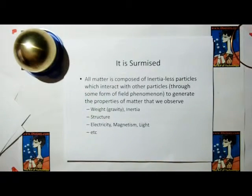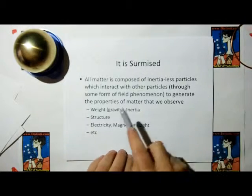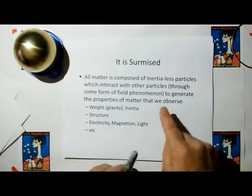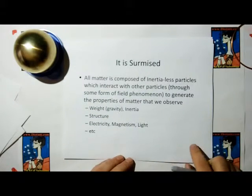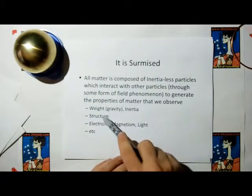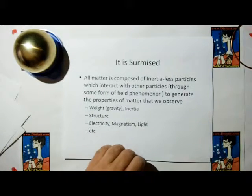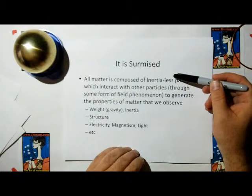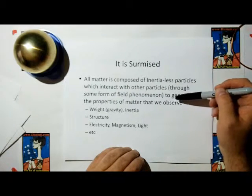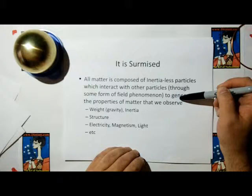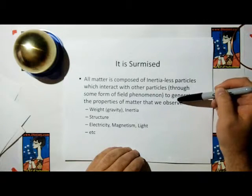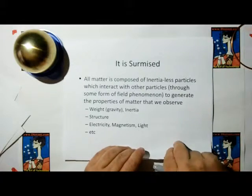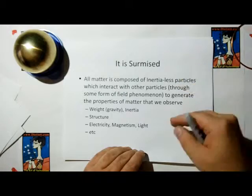So we're going to surmise that all matter must be composed of inertialist particles which interact with other particles to generate the properties of matter that we observe — like weight, inertia, structure, electricity, magnetism, light, etc. Because we've shown that inertia is not an intrinsic property of mass, and if inertia is similar to gravity according to Einstein, then inertia and weight must both be decoupled from mass, just like weight is.